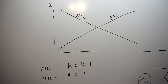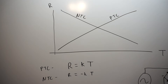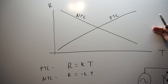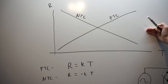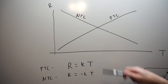Thermistors come in all kinds of temperature response curves. Here we have temperature on the x-axis and resistance on the y-axis — resistance versus temperature — showing how the resistance of these devices corresponds to temperature. There's really no one curve that defines all thermistors; pretty much every thermistor can have a different type of curve depending on what it's made out of, how they've doped it, and many other factors.